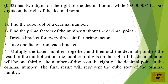To find the cube root of a decimal number: 1. Find the prime factors of the number without the decimal point. 2. Draw a bracket for every three similar prime factors. 3. Take one factor from each bracket. 4. Multiply the taken numbers together, and then add the decimal point to the result. The number of digits on the right of the decimal point will be one-third of the number of digits on the right of the decimal point in the original number.